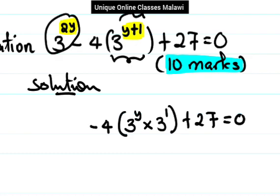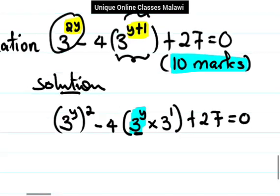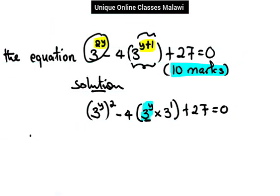We can see that 3 to the power y appears here. We need to write it as 3 to the power y then here square. Also the 3 squared. Now like I said, we need to let 3 to the power y equal to, let's just put m.